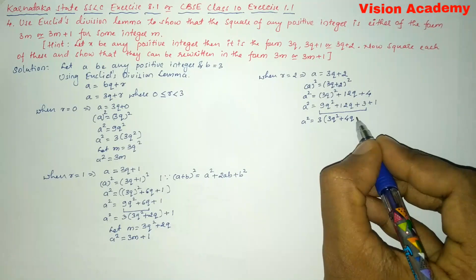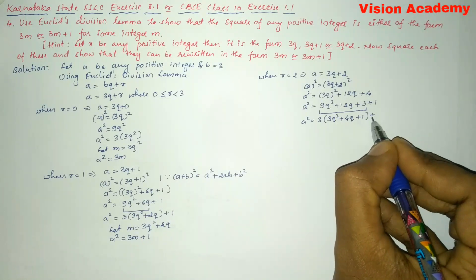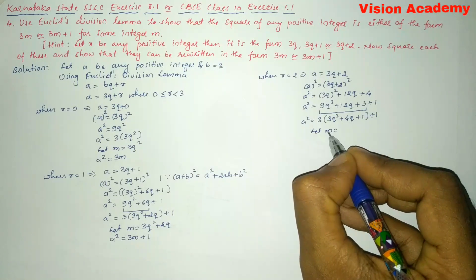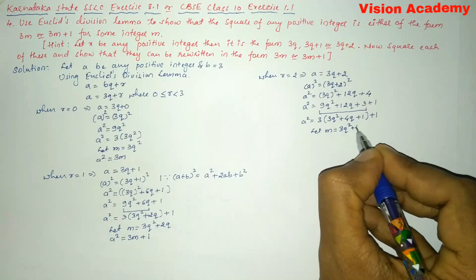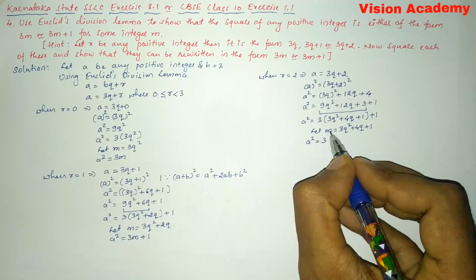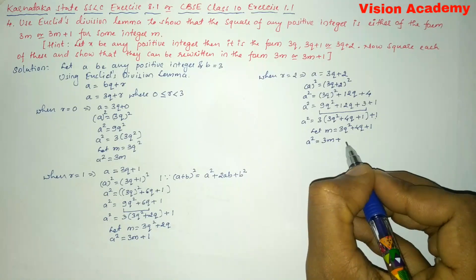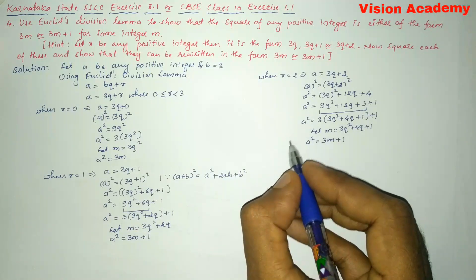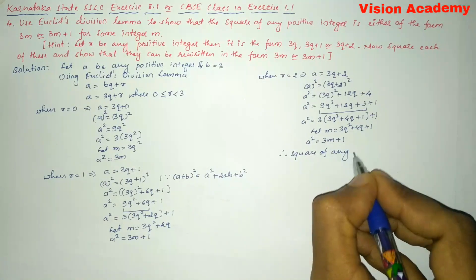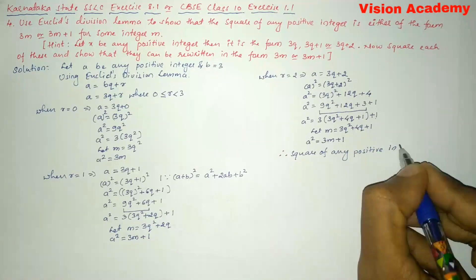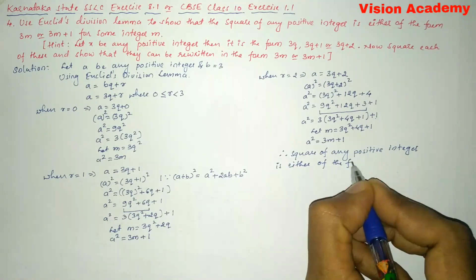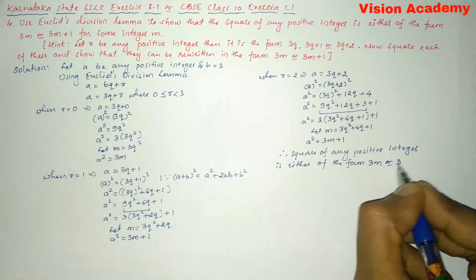Let M equal to 3Q squared plus 4Q plus 1. Then A squared is equal to 3M plus 1. Therefore, the square of any positive integer is either of the form 3M or 3M plus 1.